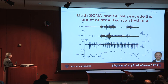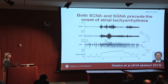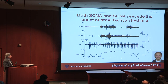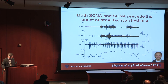Coming back to the main topic, we have recently been looking at subcutaneous nerve activity and the onset of atrial tachycardia. In this case a local bipolar electrogram shows atrial tachycardia, and there is a massive quick onset of tachycardia after the stellate ganglion nerve activity and subcutaneous nerve activity.